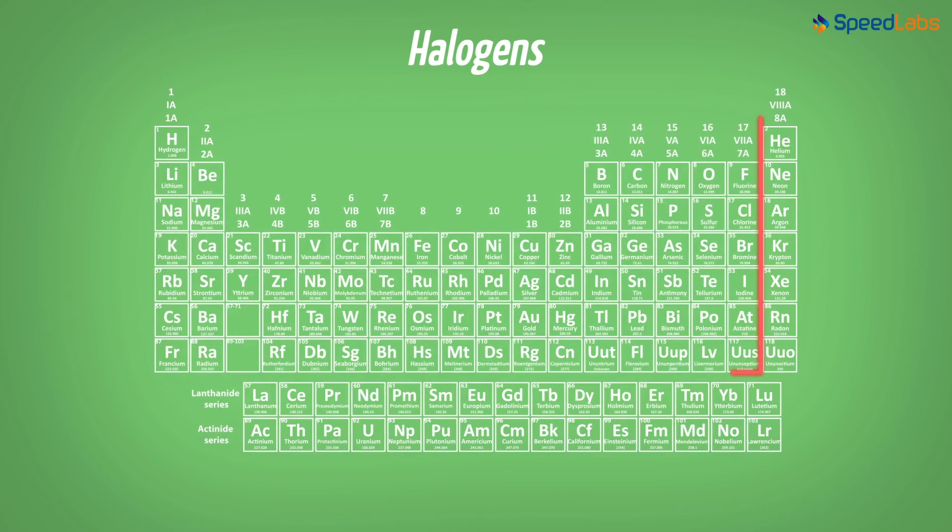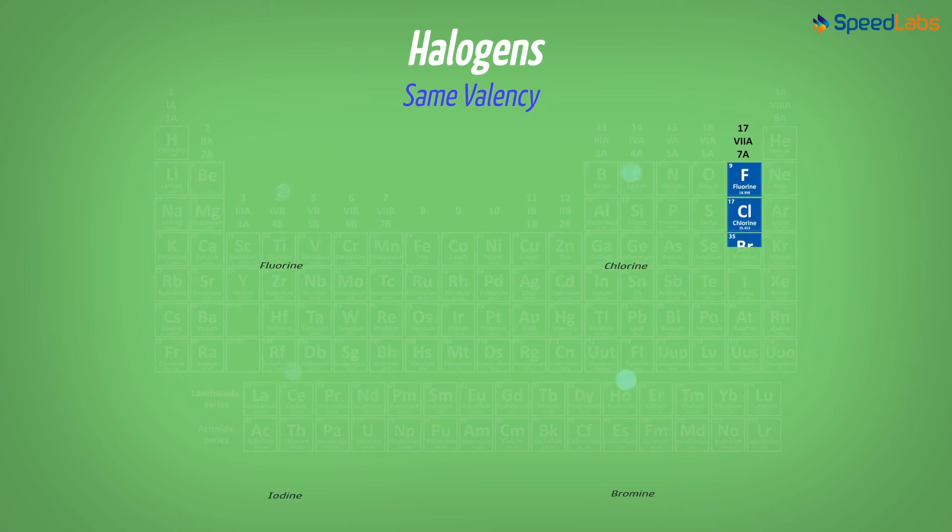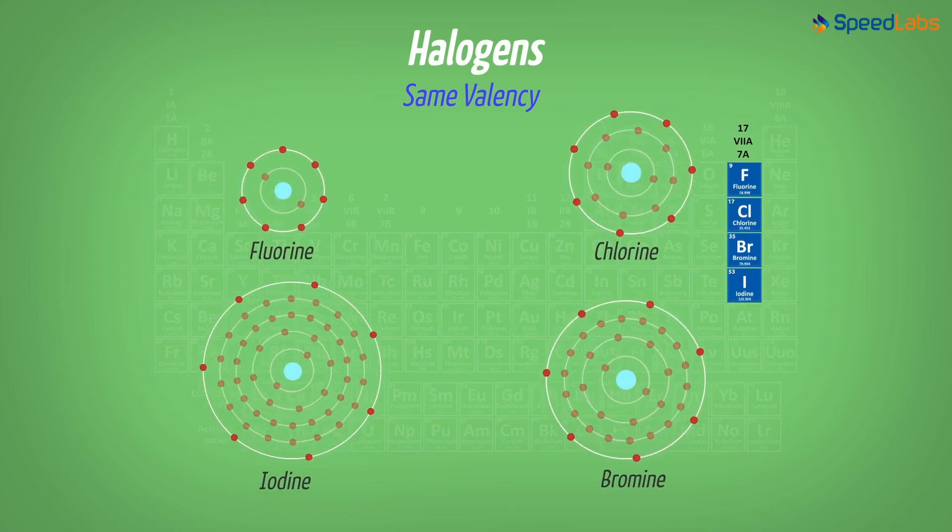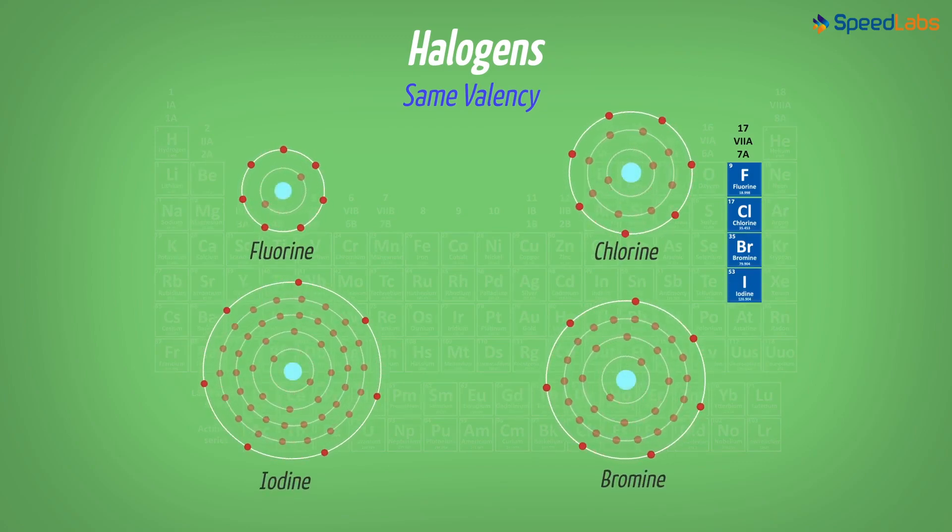We can take the example of halogens for this. These are the elements belonging to the 17th column. They all have the same valency. For instance, fluorine to iodine have same number of valence electrons in their outermost orbital. That is, seven.